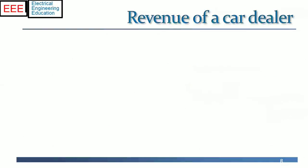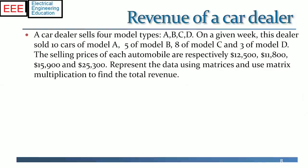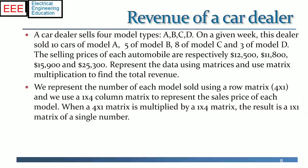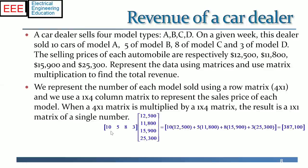We have two other practical examples. In a given week, a seller sold 10 of his type A cars, 5 of type B cars, 8 of type C cars and 3 of type D cars. The prices of these cars are respectively 12,500, 11,800, 15,900 and 25,300 US dollars. The total revenue will be the sum of products of the sequence of the number of cars and their prices as shown. Similarly, the total cholesterol is calculated as the sum of high density lipids, low density lipids, and triglyceride. For the calculation, triglyceride is taken as 20%. The total cholesterol will be calculated using the dot product as shown.